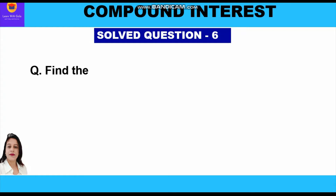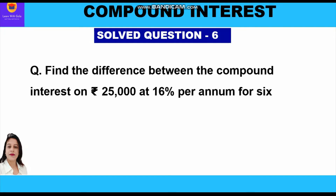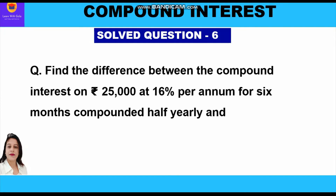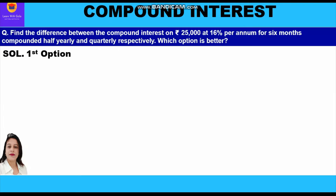Now let's start with the question. Find the difference between the compound interest on Rs 25,000 at 16% per annum for 6 months, compounded half yearly and quarterly respectively. Which option is better? The principal is Rs 25,000, rate of interest is 16% per annum, time period is 6 months, and interest is compounded both half yearly as well as quarterly.